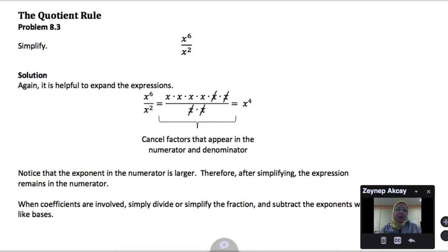The second rule we will learn deals with division of exponential expressions. So let's look at this example. If we would like to divide x to the 6th by x squared, we can expand each expression.